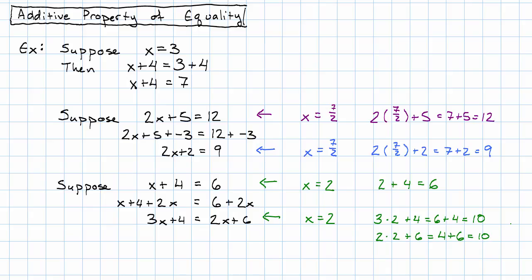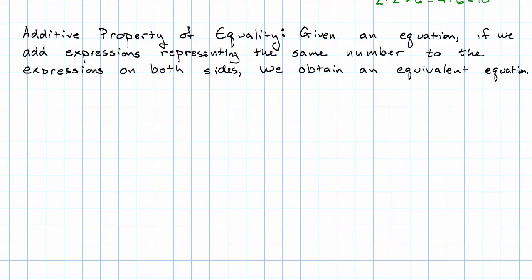Let's state this rule explicitly. So in words, we can say, given an equation, if we add expressions representing the same number to the expressions on both sides, we obtain an equivalent equation.